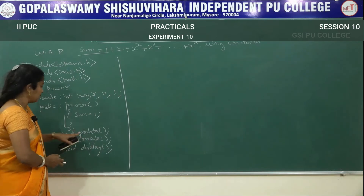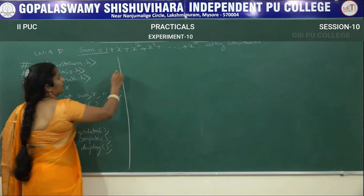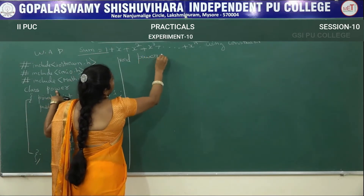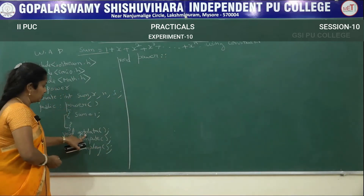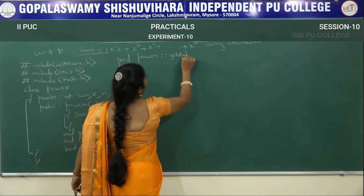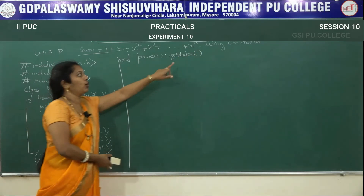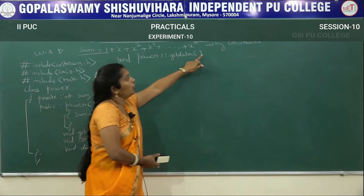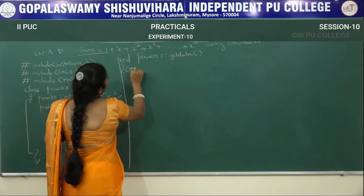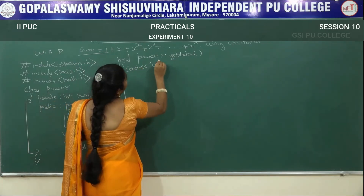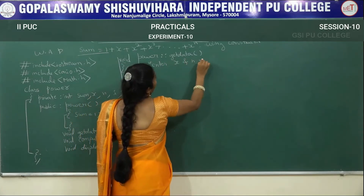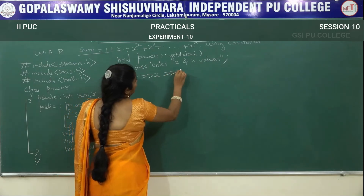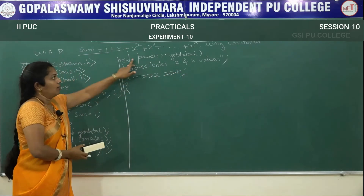Now one by one we write the statements outside the class. First, write the getdata function. The return type is void, class name is power, then scope resolution operator, then getdata function. Here we are not writing any semicolon because we are writing the statement. Inside: cout with insertion operator 'Enter x and n values', then cin with extraction operator x, extraction operator n. Close this function.